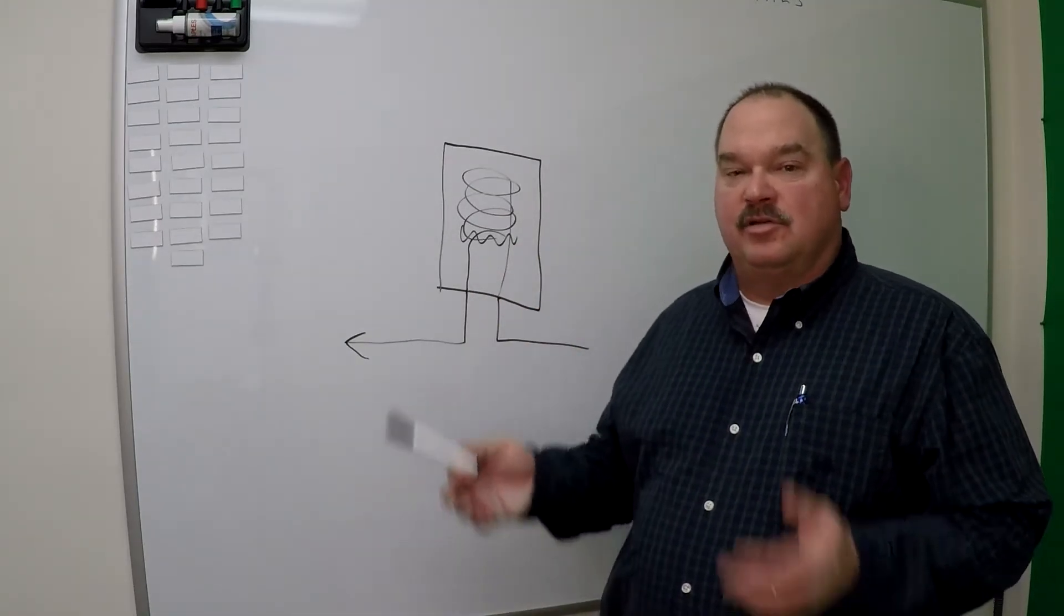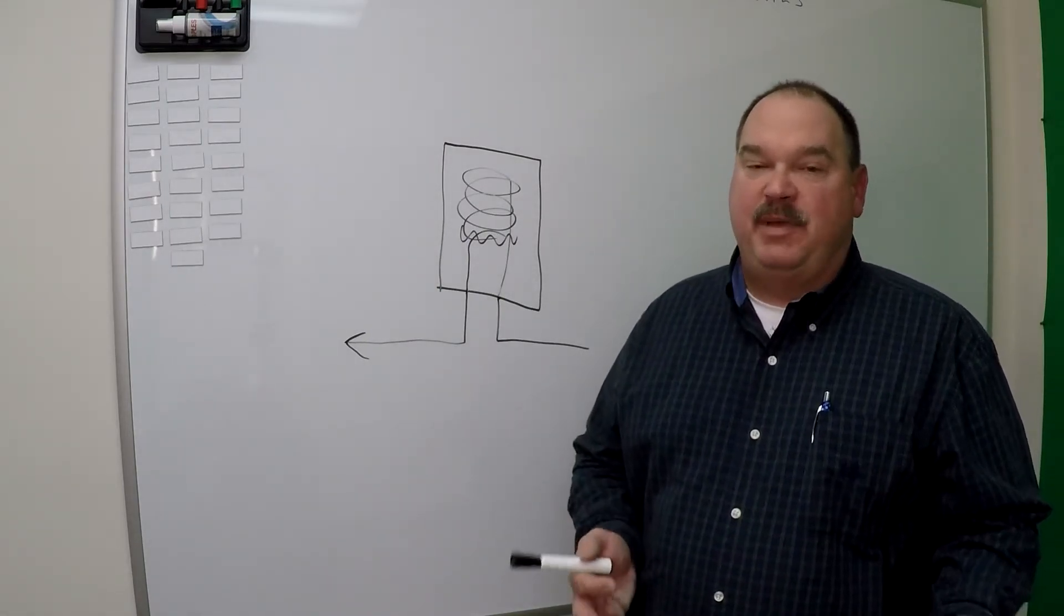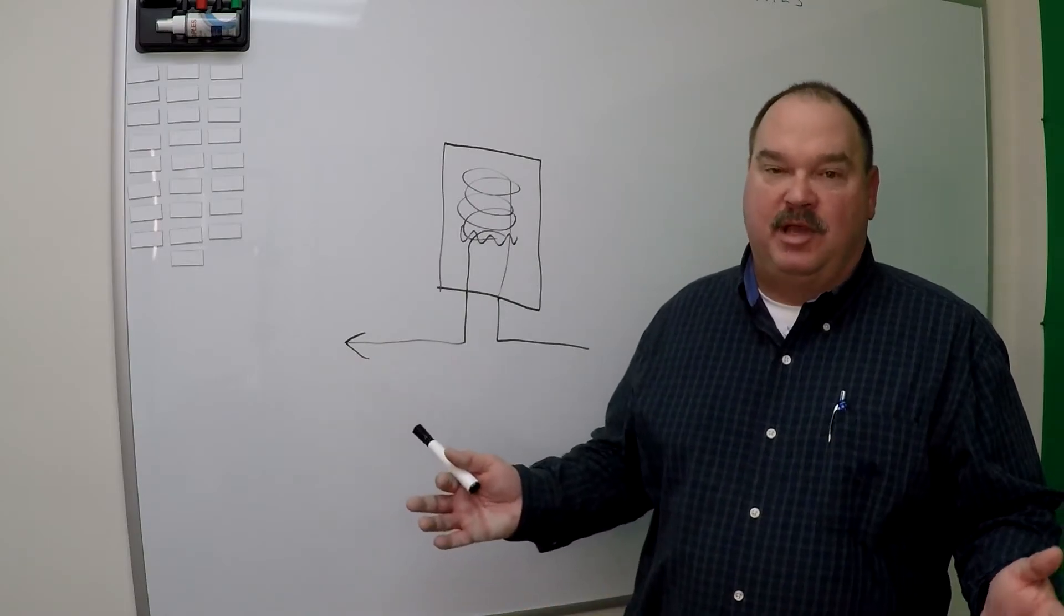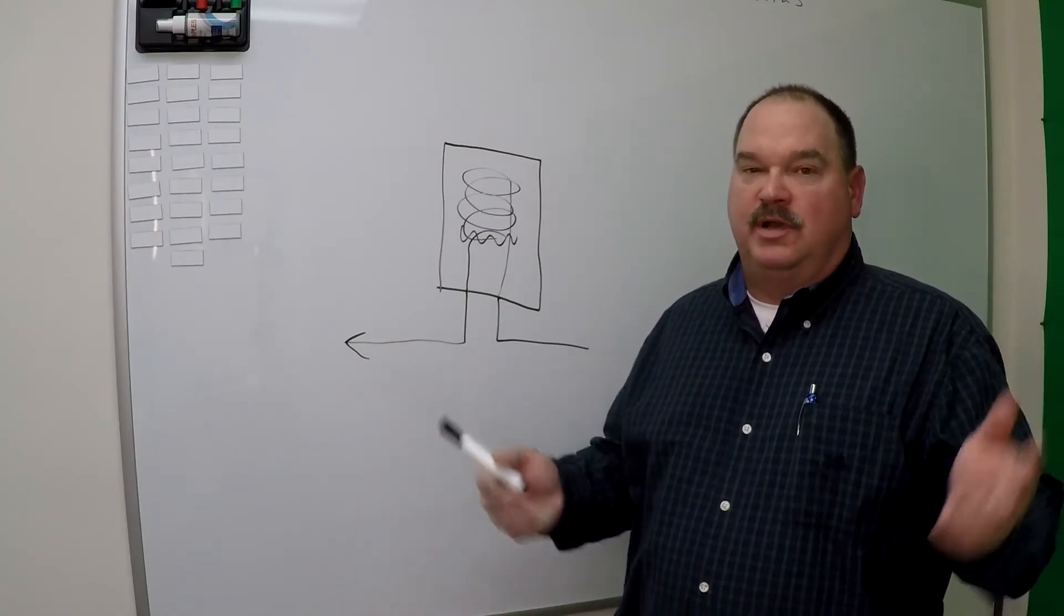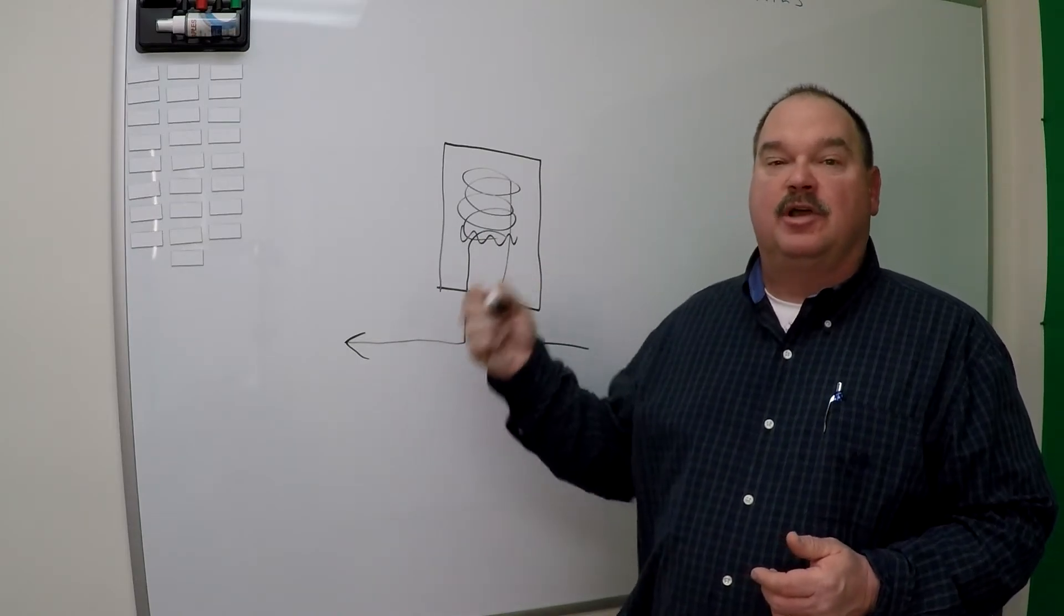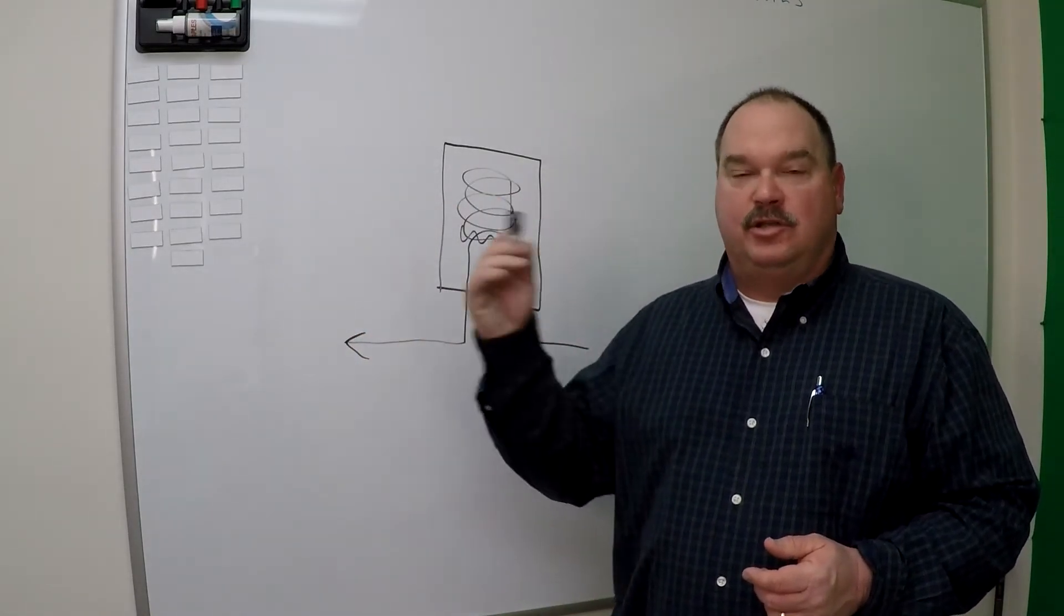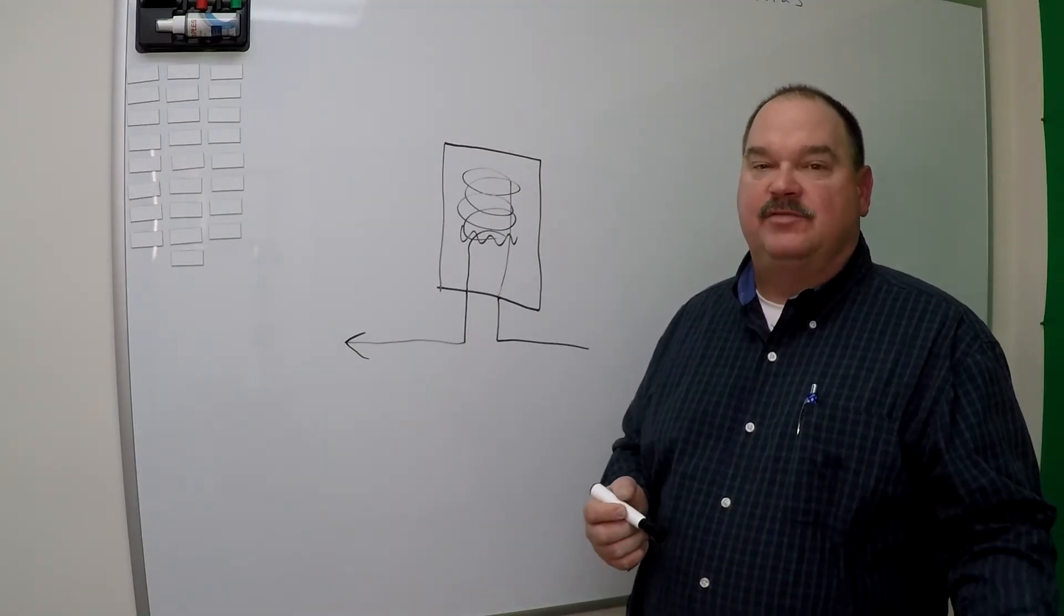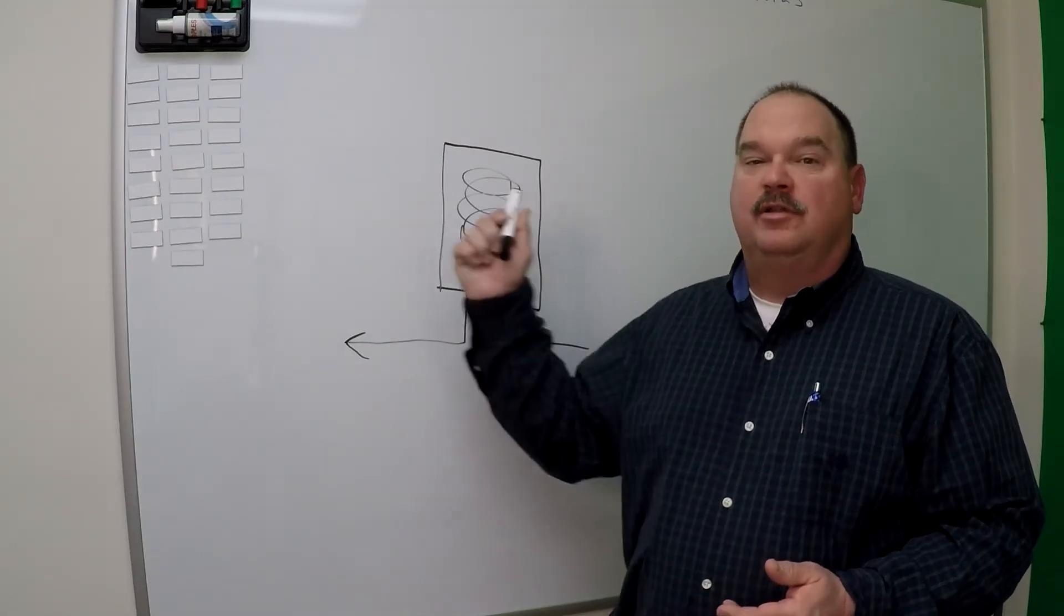Also, because tankless water heaters are very small, you get a lot of space back in your home. The area where the big tank used to be is now going to be open for any other kind of storage or whatever you want to use it for. Also, because they're small, you can locate them closer in a lot of cases to the hot water demand, which can reduce your lag time, which is the time it takes for hot water to get from the water heater to those fixtures.